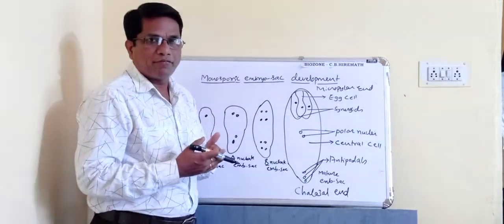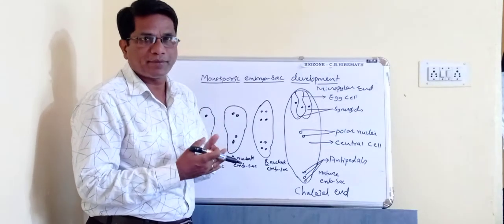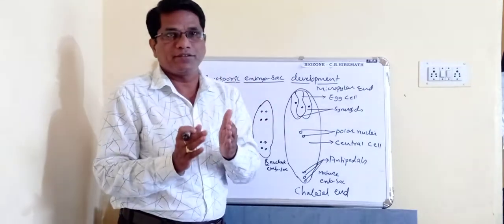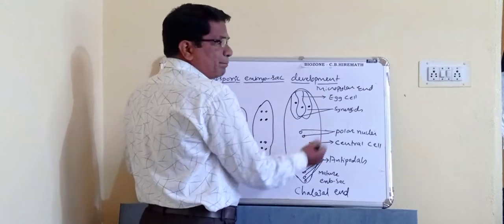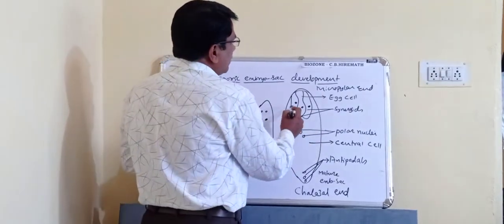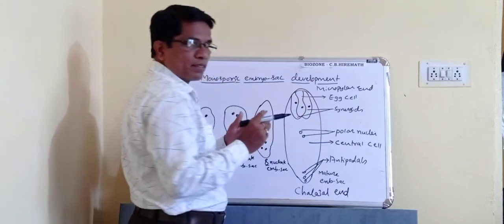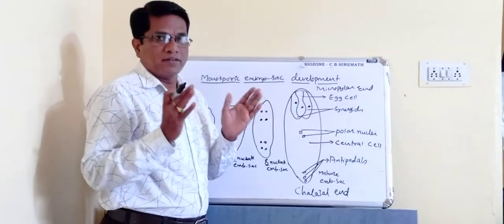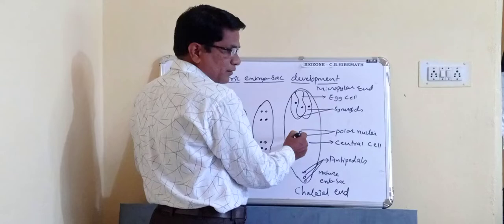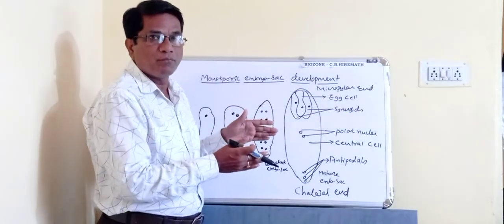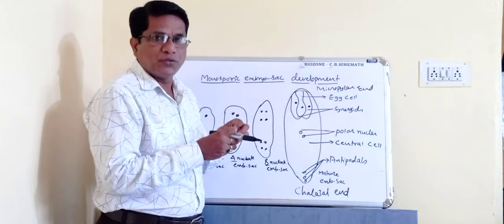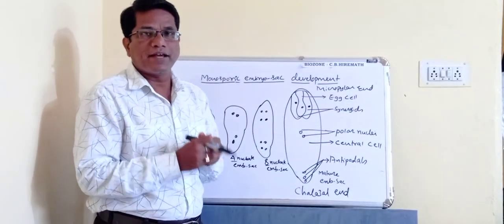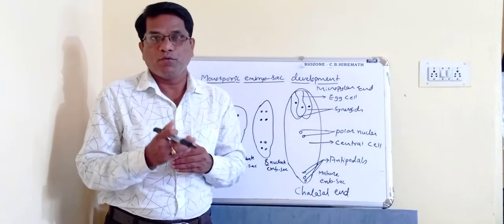This is how the development of the embryo sac from a megaspore is explained in your NCERT textbook. The division of the nucleus is a free nuclear type. In the mature embryo sac there are three antipodal cells and the two polar nuclei present in the central cell, which came from the polar regions. These two nuclei fuse together to form the secondary nucleus.